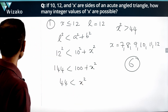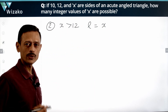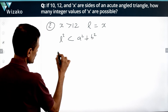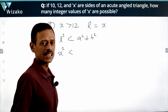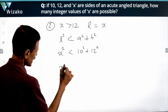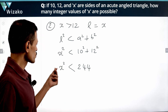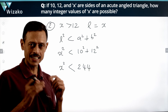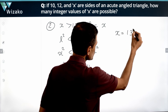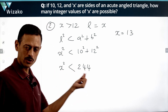Scenario 2: x is greater than 12, so the longest side is x. The inequality is L² < a² + b², with L = x. So x² < 10² + 12², which gives x² < 100 + 144 = 244. The least integer value of x greater than 12 is 13. Is 13² = 169 less than 244? Yes. Is 14² = 196 less than 244? Yes.